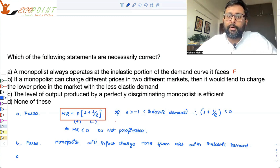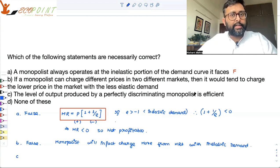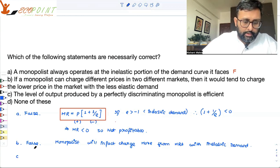Level of output produced by a perfectly discriminating monopolist is efficient. Yes, it is. We have done this in class also, that in the perfectly competitive market, the output which is produced at P equal to MC, that is efficient. And in case of perfect price discrimination, that is first degree price discrimination also, the output is produced at P equal to MC. So that output level is Pareto efficient. Please write this. This is true.